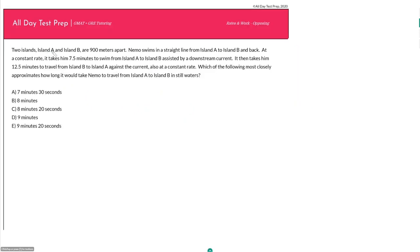Two islands, island A and island B, are 900 meters apart. Nemo swims in a straight line from island A to island B and back at a constant rate. It takes him seven and a half minutes to travel from island A to island B, assisted by a downstream current.